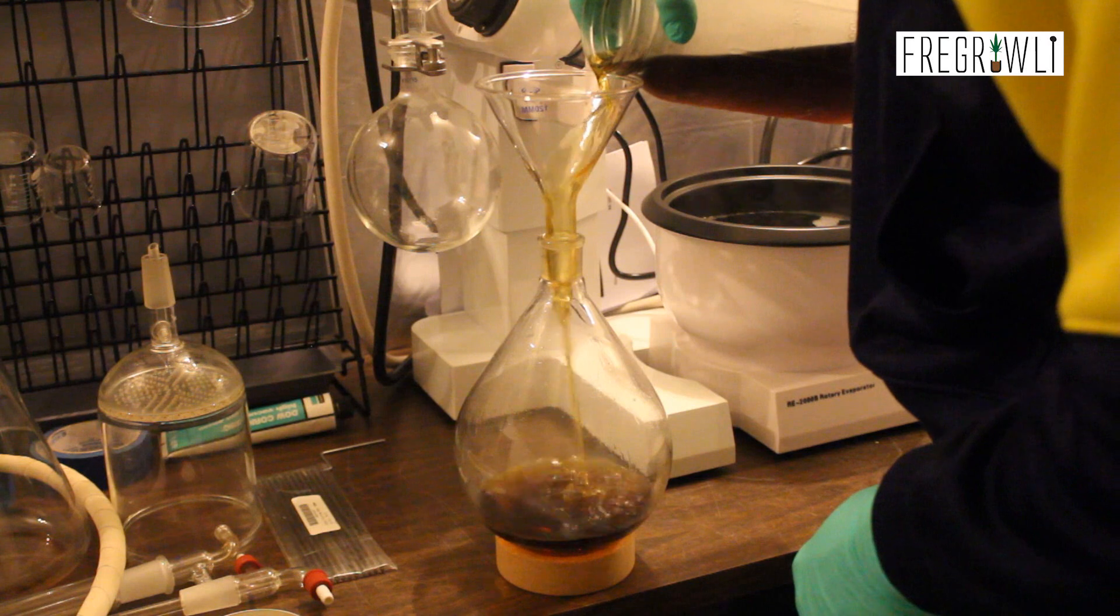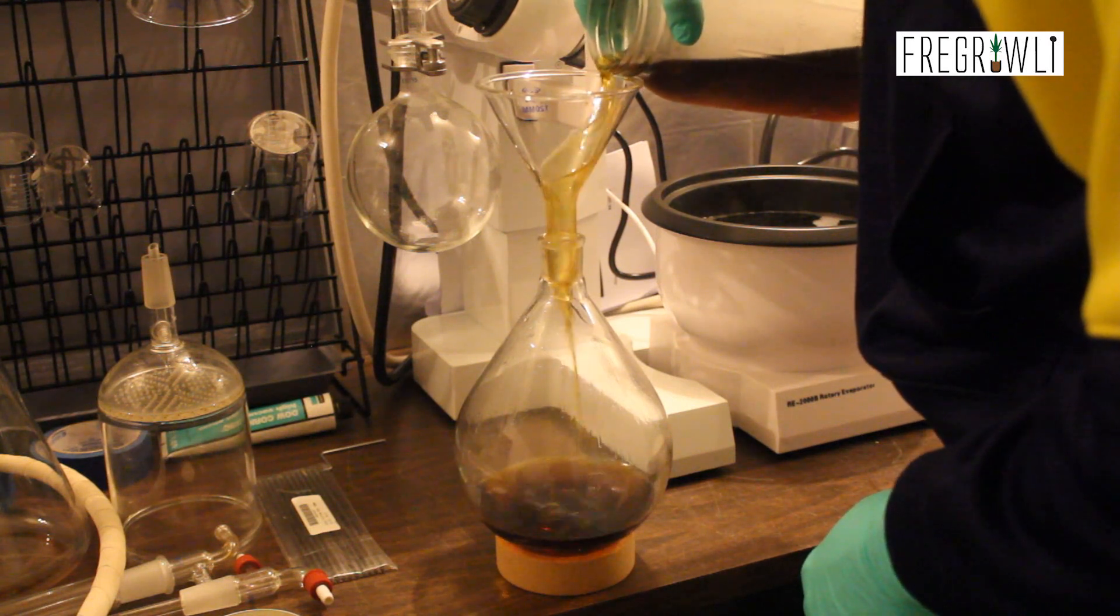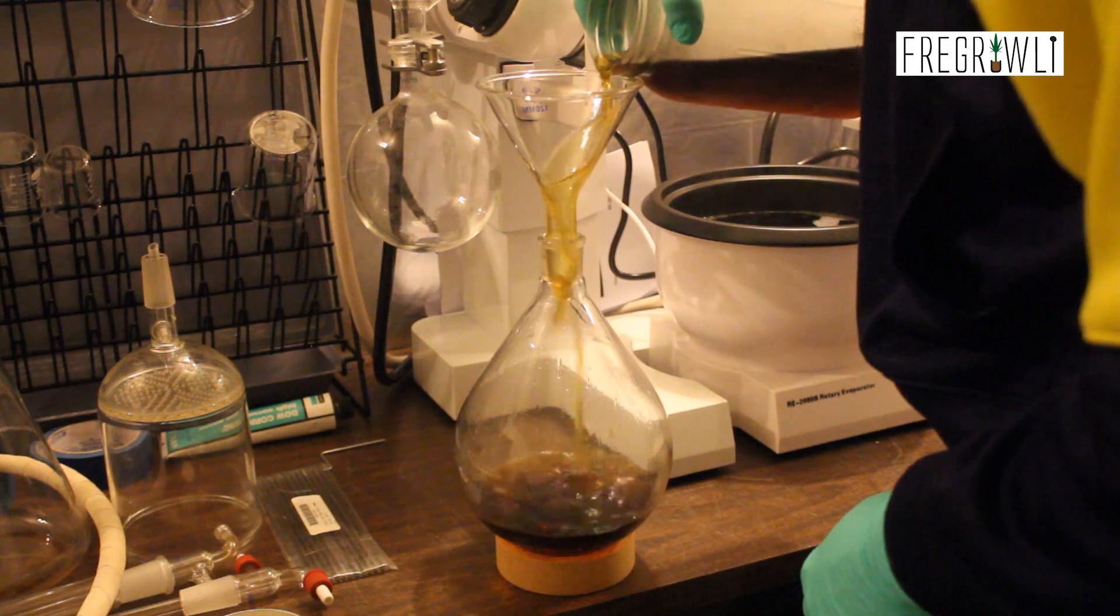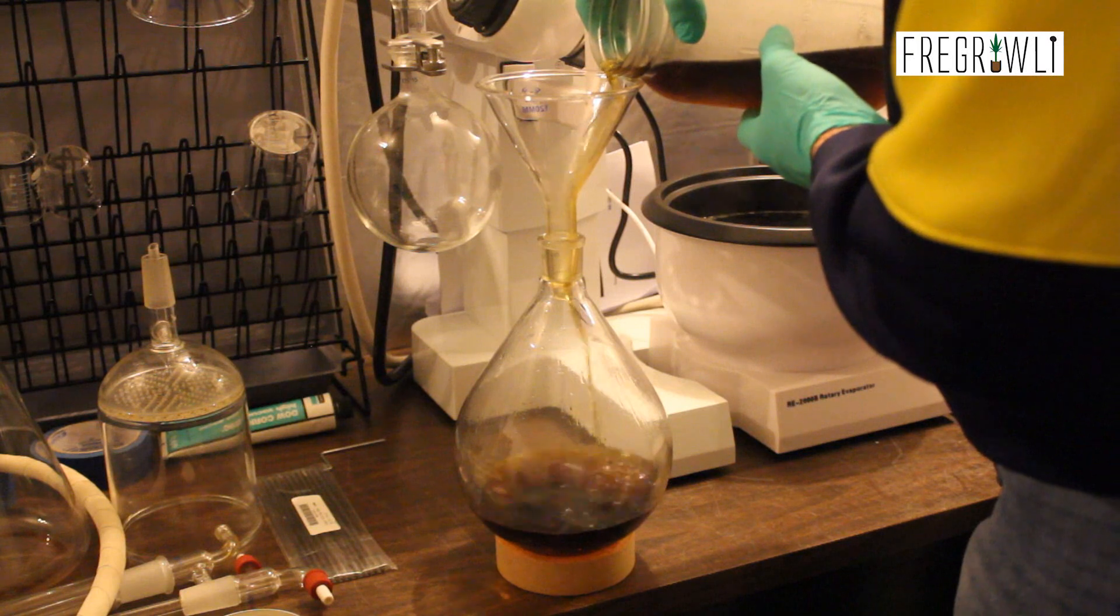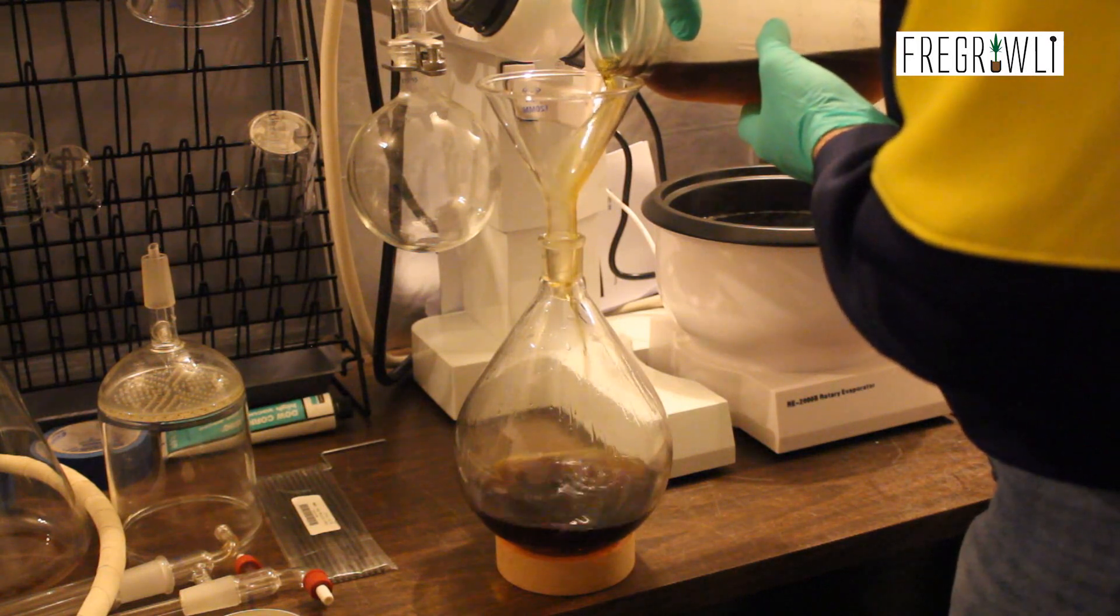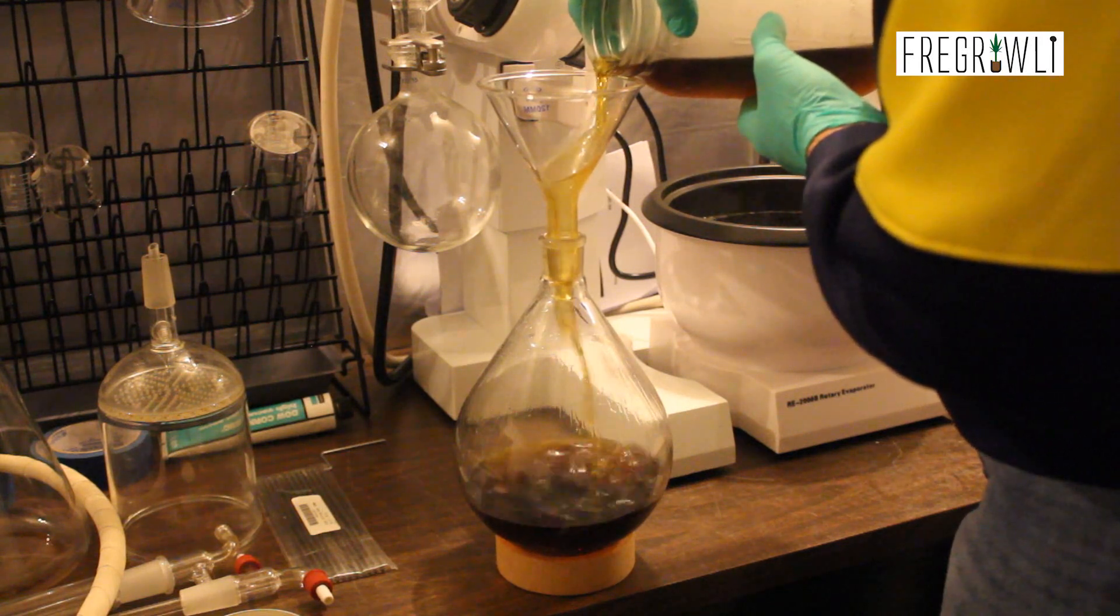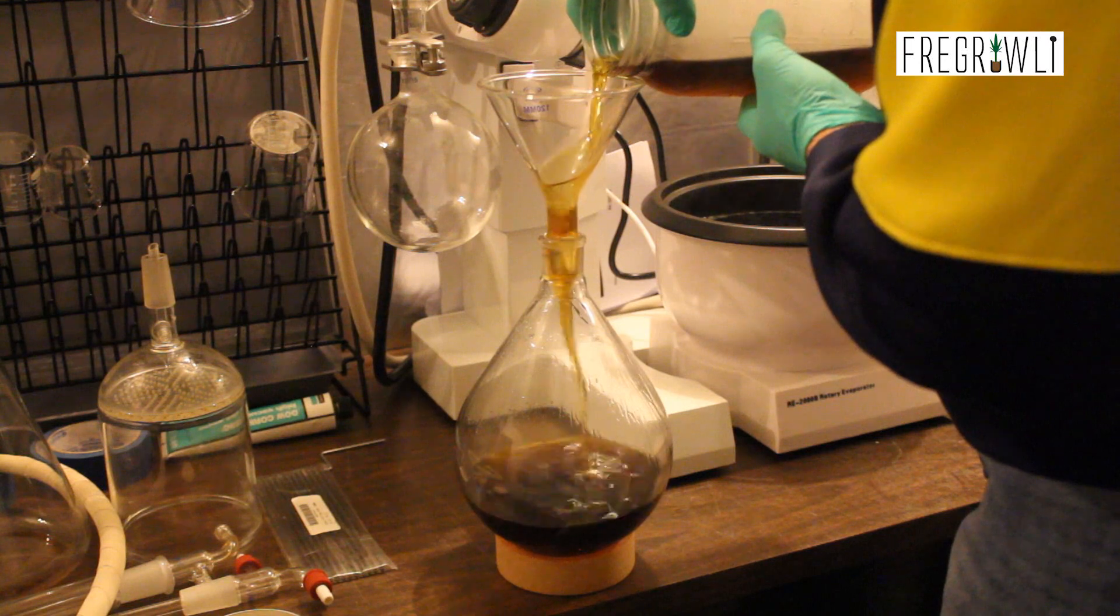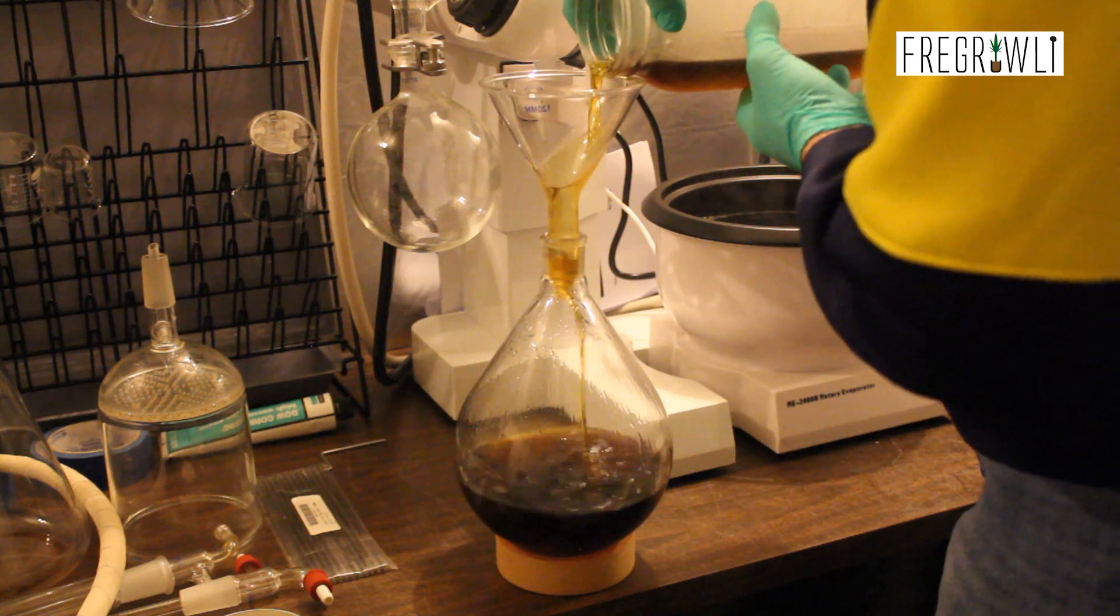Ensure your receiving flask is connected properly using the provided clamp. Then fill up your evaporation flask with the winterized material. Keep in mind that you should only fill your flask to half of its capacity. For example, with this 2-liter rotovap setup, I should only be running about 1 liter of material at a time. This is a good time to have a funnel handy, and Best Value Vacs makes a 120 milliliter glass funnel that fits perfectly. Just don't pour your extract too fast or it will bubble up all over the place and cause quite the sticky mess.